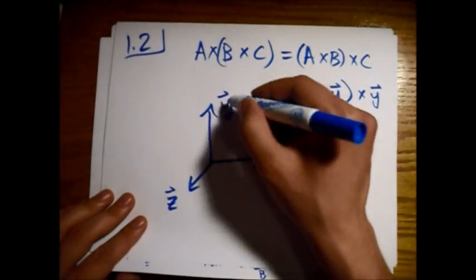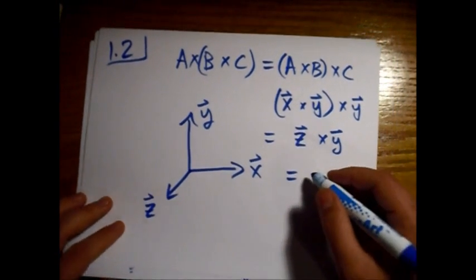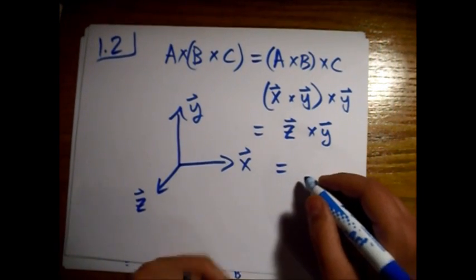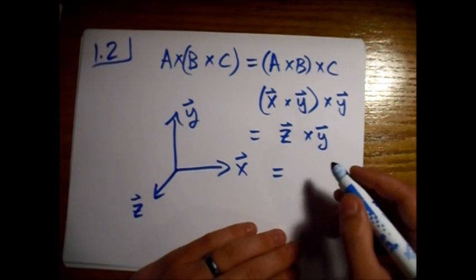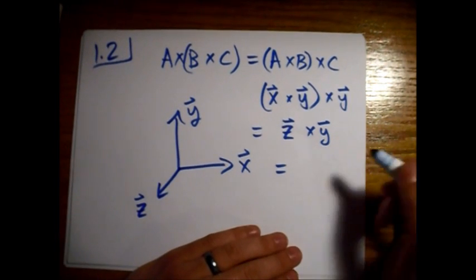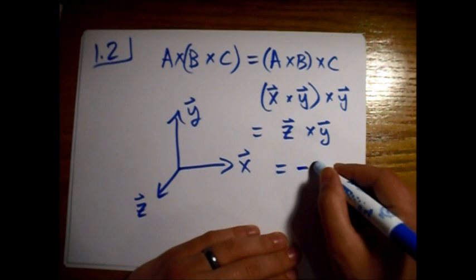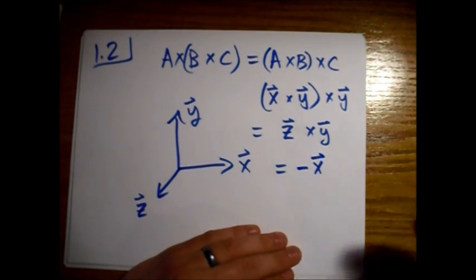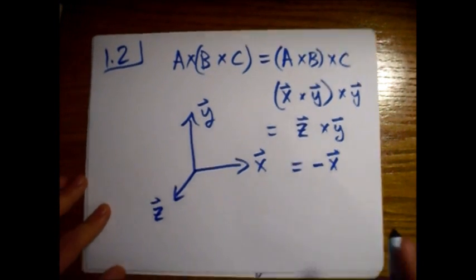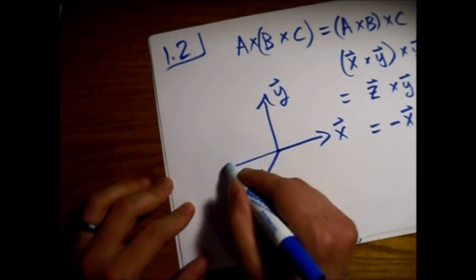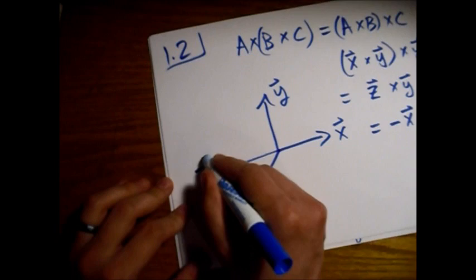I guess you could just call these all the unit vectors or the normal basis set or something like that, just as an example. So if we do it that way, we get a minus x. So call it minus x, like that.